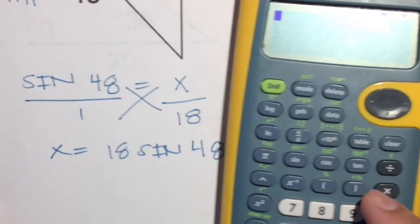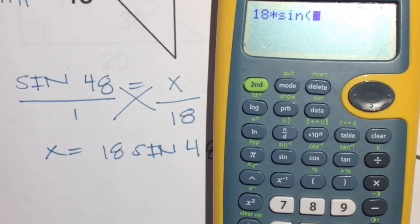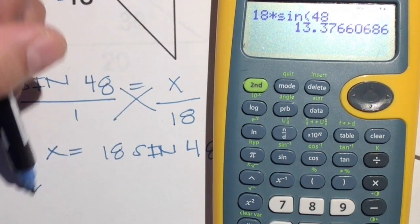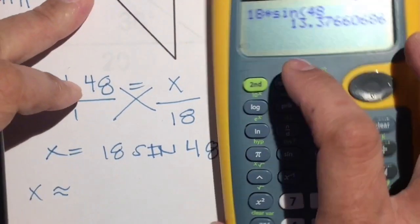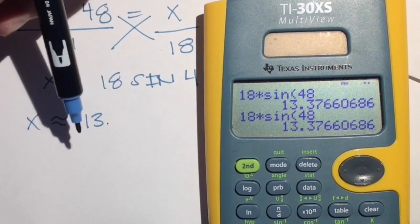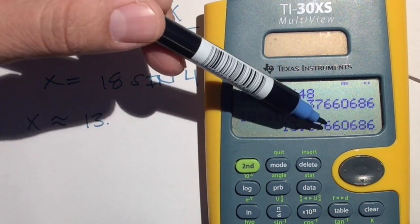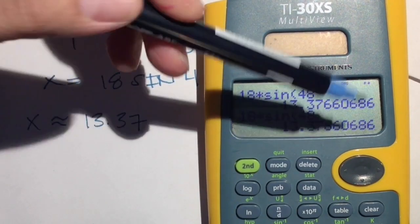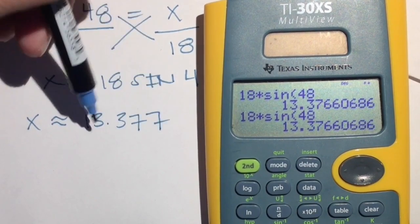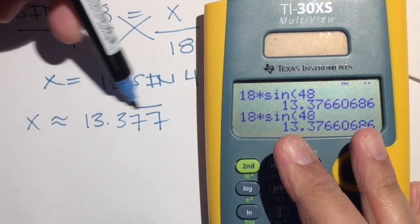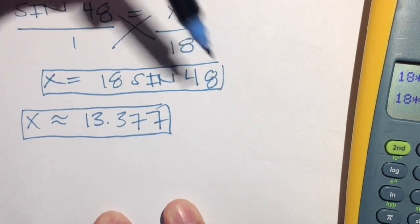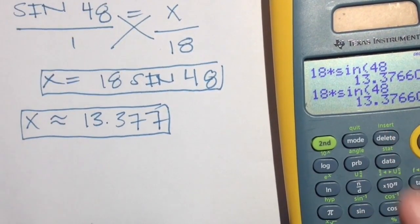Type in 18 times sine of 48 and you get 13.3766... Let's round to the nearest thousandth — three decimal places, since 'thousand' has three zeros. The fourth digit is above 4, so we round up: x ≈ 13.377. That is the numeric answer; 18 sin(48) is the exact answer. Both are correct.